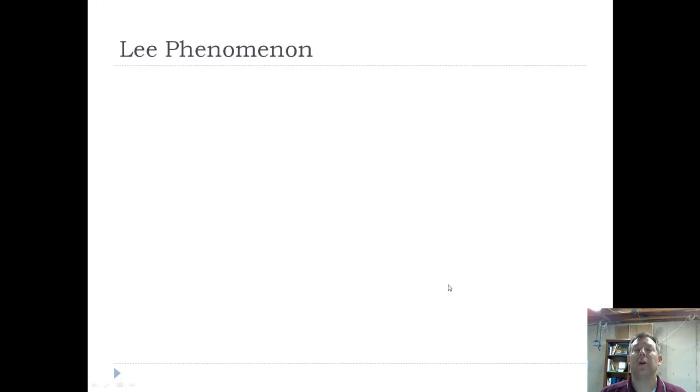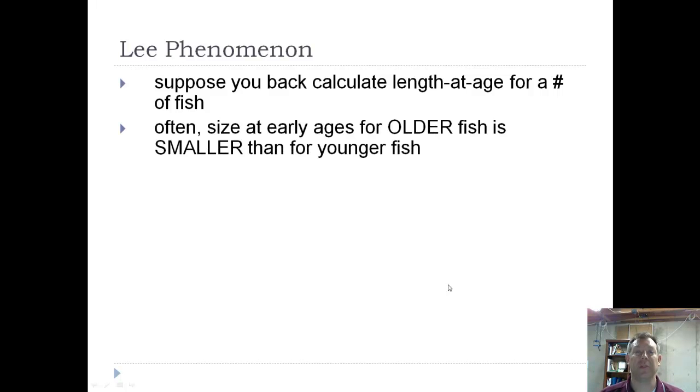Now, one thing that you need to be aware of when you're working with back calculations is something called the Lee phenomenon. I'm not sure if it's the same Lee that did the Fraser-Lee correction, it doesn't matter. But this is something to watch out for when you do back calculations. Let's say that you have a number of fish and you back calculate the length at age for all these fish. Many times you'll recognize that as you summarize the data, that the size at early ages for the older fish is less than the size at early ages for the younger fish.